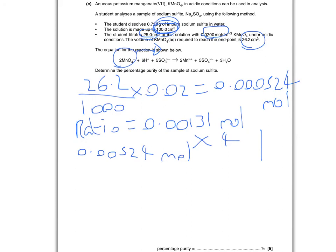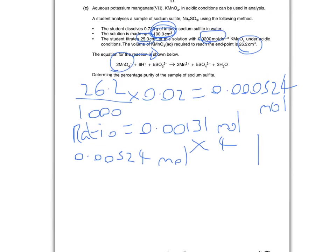So we've got 0.00524, we times that by the MR which is 126, and that will give us our fourth mark, which comes to 0.66024 grams. Mark number 4 in the bag.